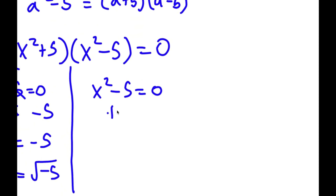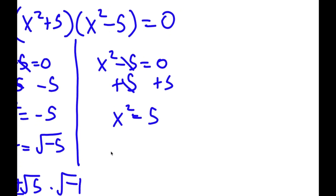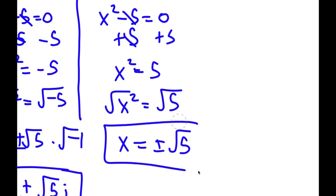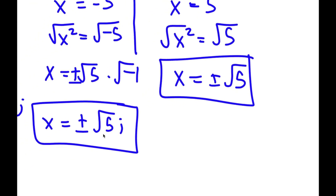For x squared minus 5 equals 0, adding 5 gives x squared equals 5. Taking the square root of both sides gives x equals positive or negative square root of 5. These are two more solutions, giving me four total solutions to this problem.